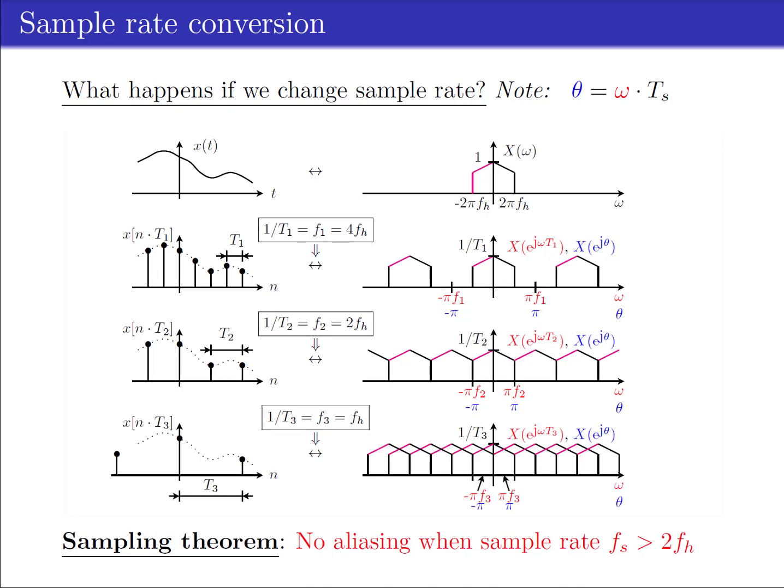When decreasing the sampling frequency further to f3 = 1/T3 = fh, we obtain aliasing. Spectral components of the original spectrum X(omega) will overlap and mix.